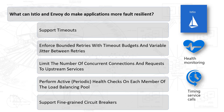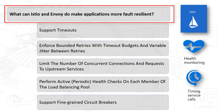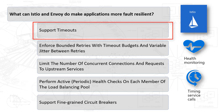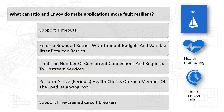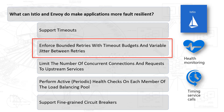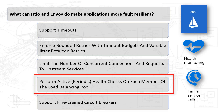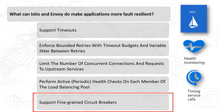Istio in combination with Envoy on Kubernetes aims to make applications more fault resilient. We'll explore several capabilities: supporting timeouts — setting a seven-second timeout to reach the rating service; enforcing bounded retries with timeout budgets and jitters between retries; limiting the number of concurrent connections and requests to upstream services; performing active or periodic health checks to each member of the load balancing pool; and supporting fine-grained circuit breakers.